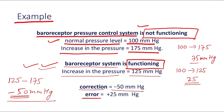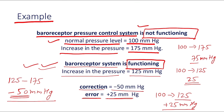Now, what is the error? The normal pressure we have assumed is 100 mmHg. But even when the baroreceptor system is functioning, pressure rises to 125 mmHg — meaning there is still an increase of 25 mmHg even with this system functioning. So this 25 mmHg is the error.